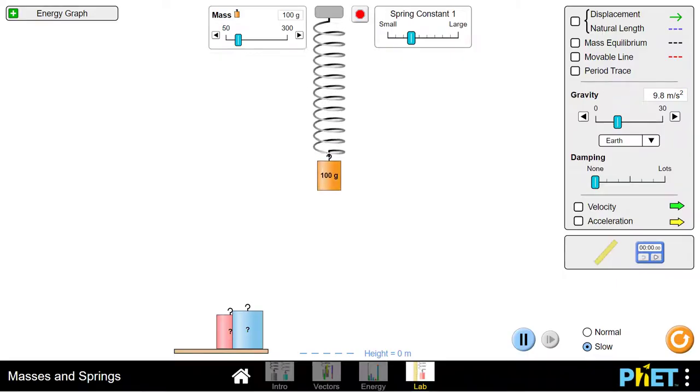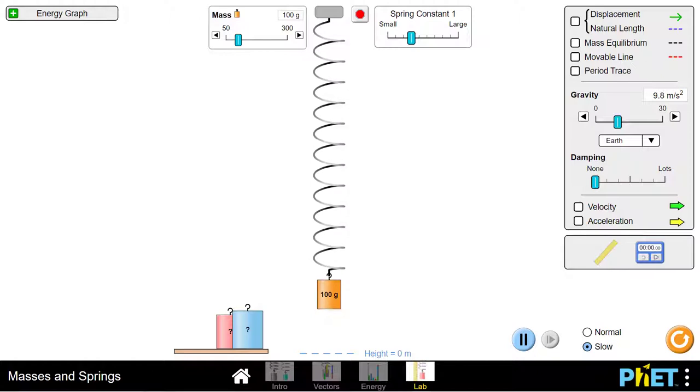The spring force is also a conservative force. The network done by this spring on the attached mass depends only on the net amount of elongation or compression. Again, think displacement. This mass could bounce up and down a thousand times, but the network done on it by the spring force depends only on the net elongation or compression. So if this mass only bounced up and down once, the network done on it by the spring force is the same as the network done on it if it bounced up and down a thousand times.